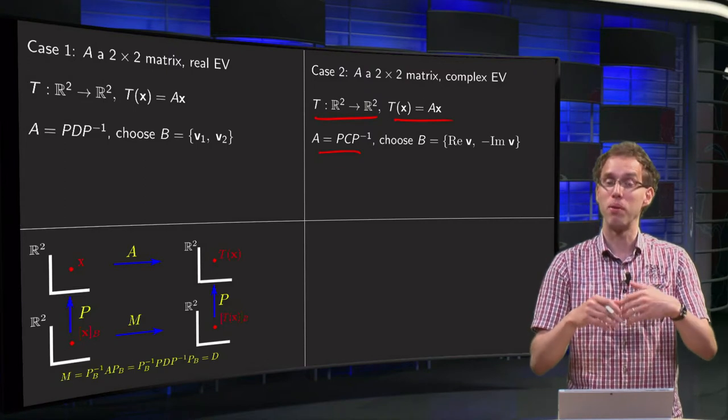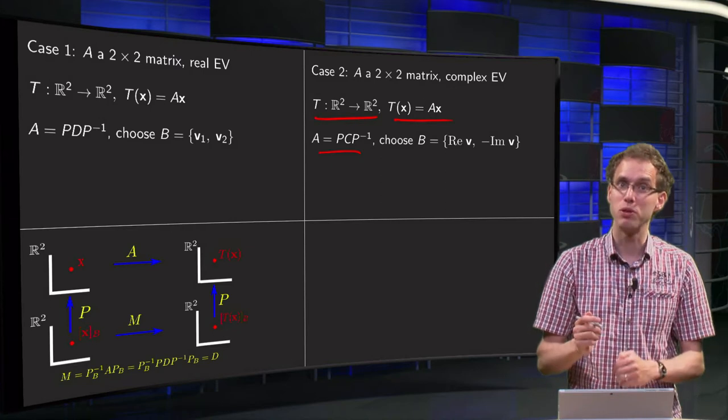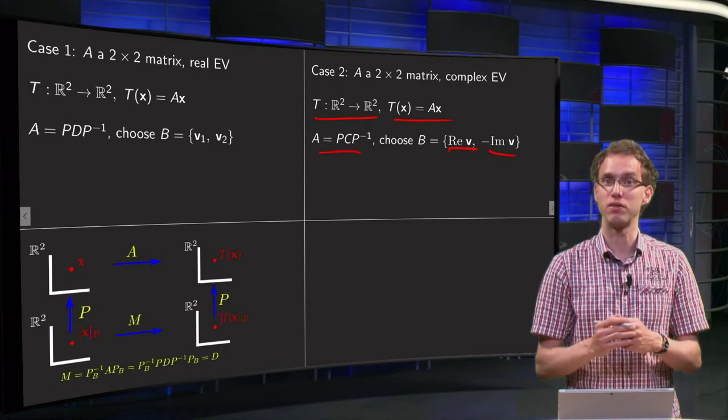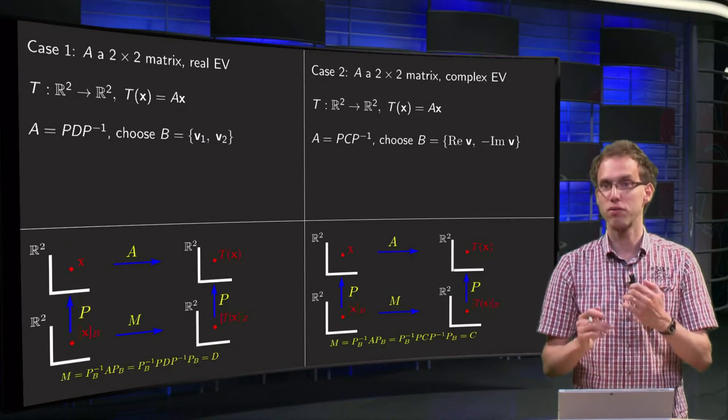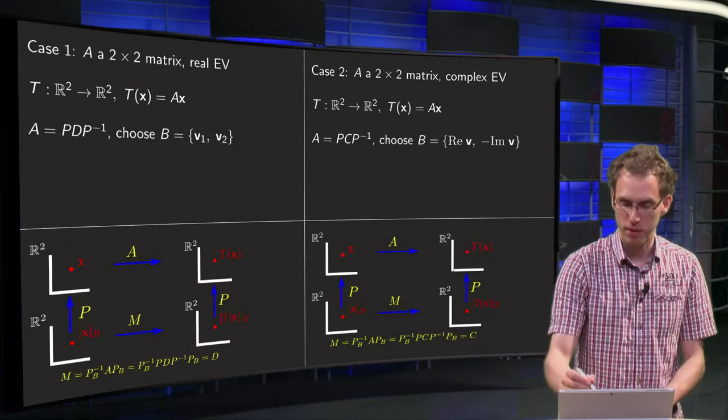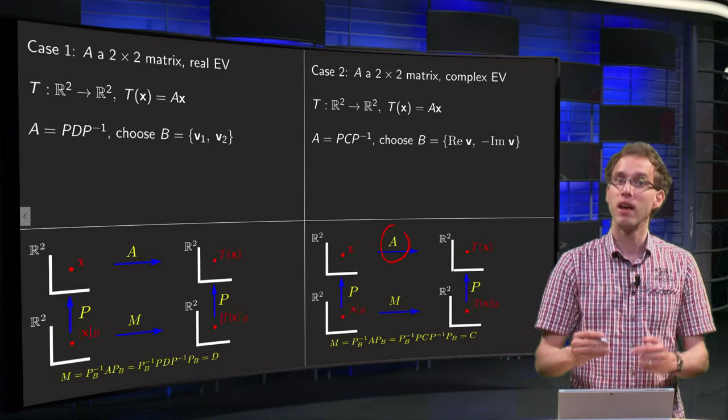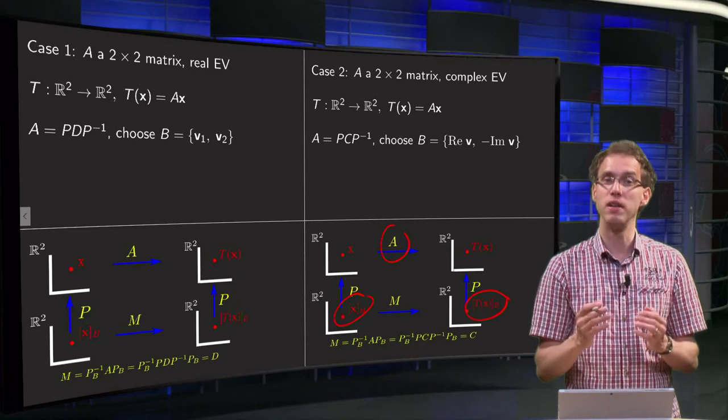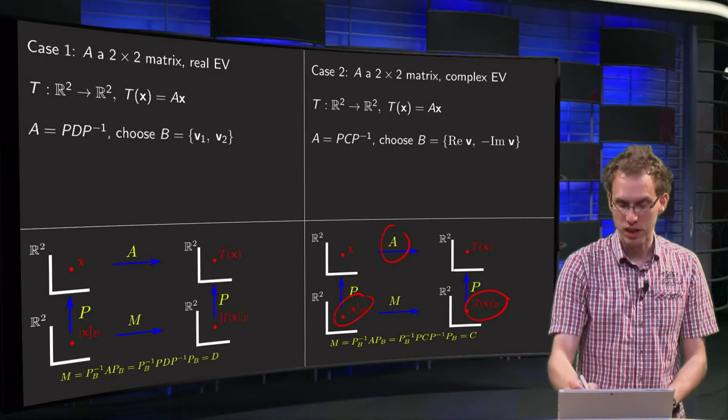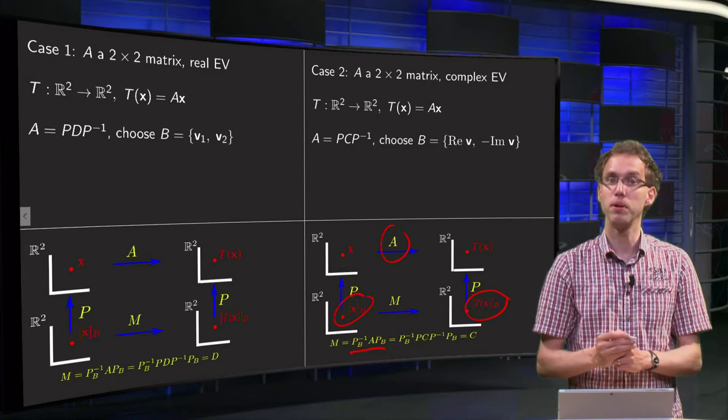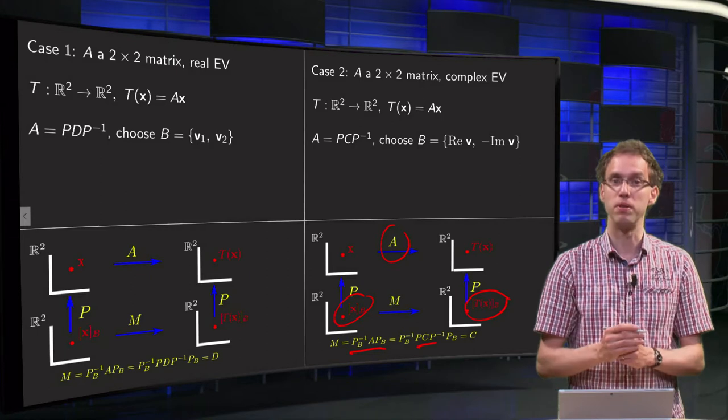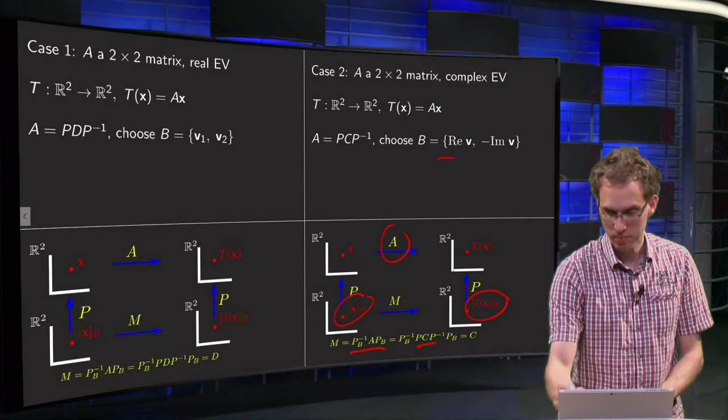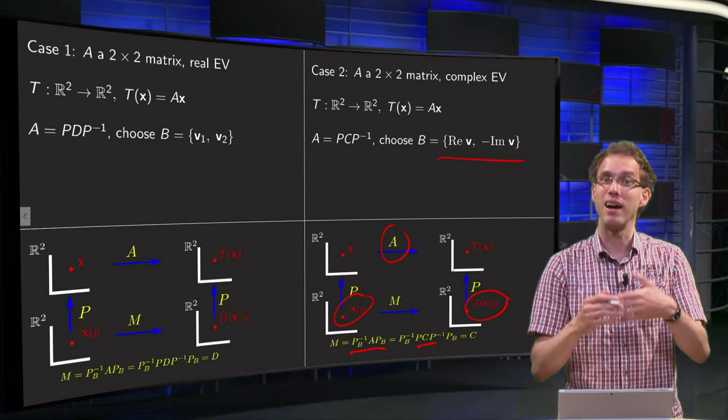We're going to view our mapping again with respect to another basis, but now we use as our basis B the real part of eigenvector v and minus the imaginary part of eigenvector v. We get the same picture: on top we have our mapping T implemented by A, we look with respect to another basis, so we have x_B and T(x) in basis B. Again, our matrix M is given by P_B inverse times A times P_B. We've chosen our basis B such that P and P_B are exactly the same.